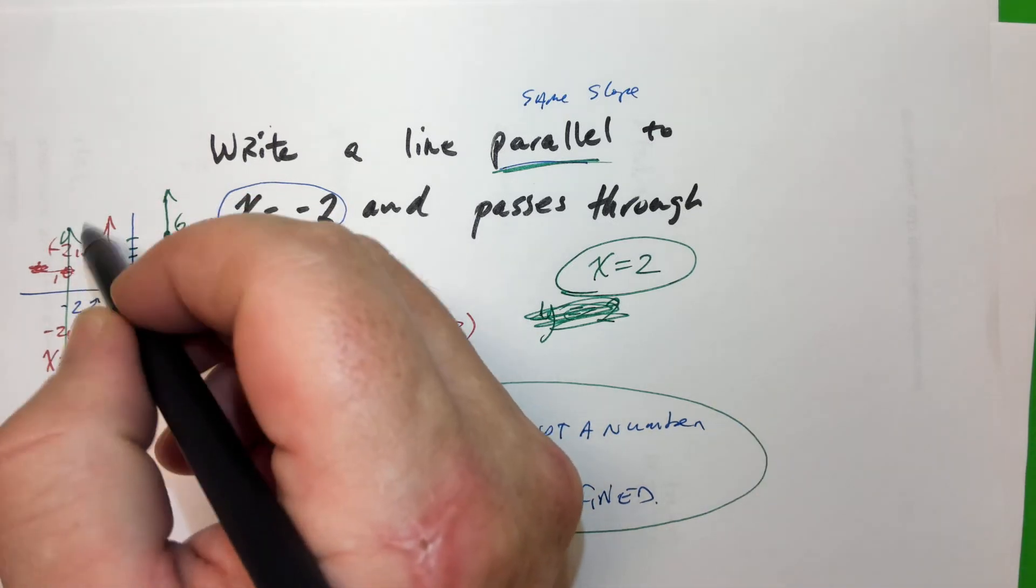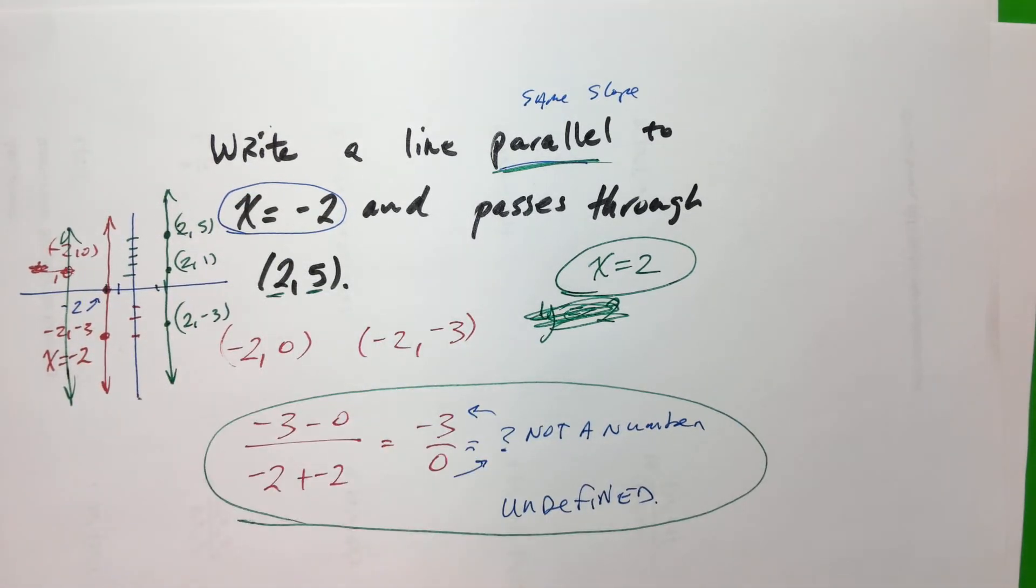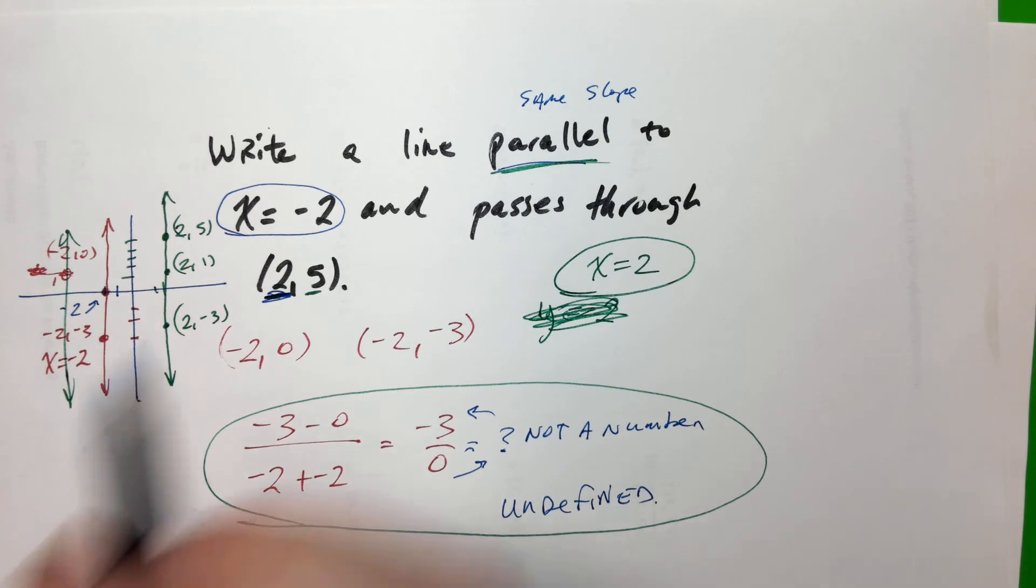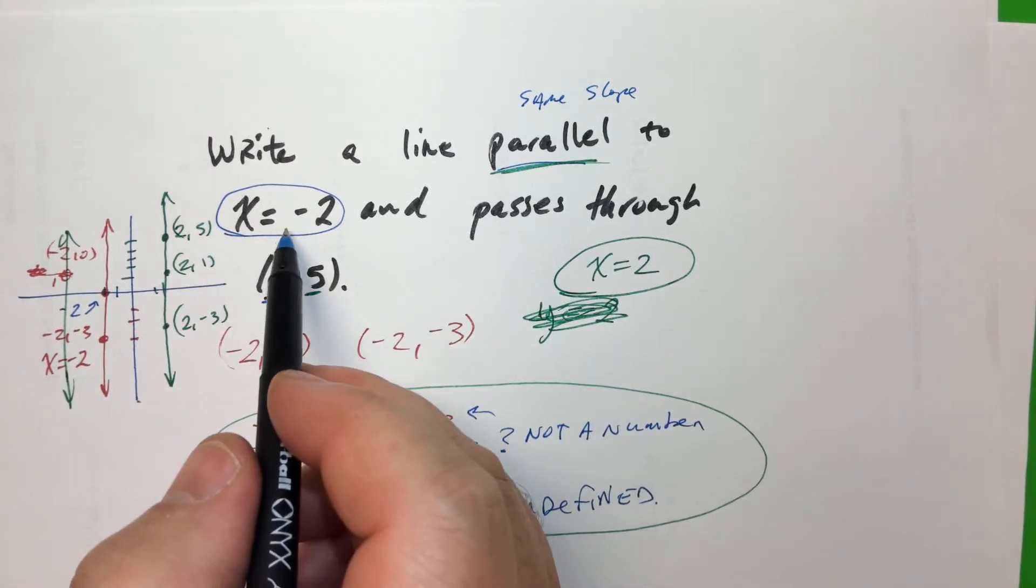Because it's going to be a vertical line. So you're basing it on what the point we're doing? Yeah, it has to go through here. It has to go through there. And it's going to be vertical because it's going to be parallel to that.